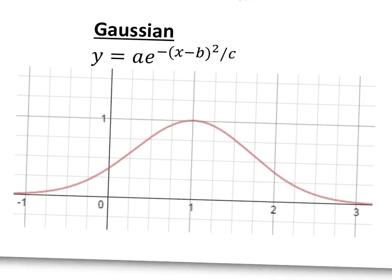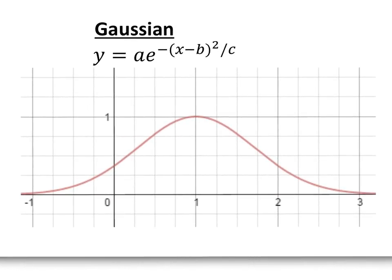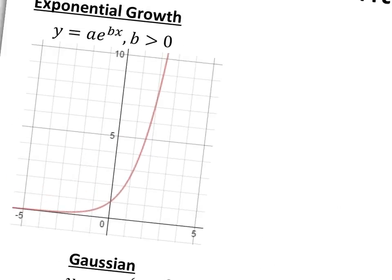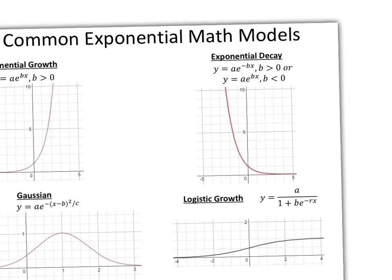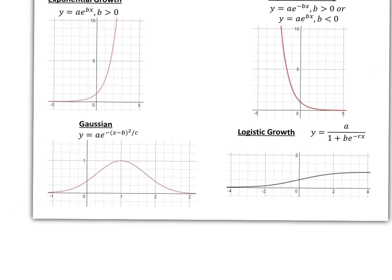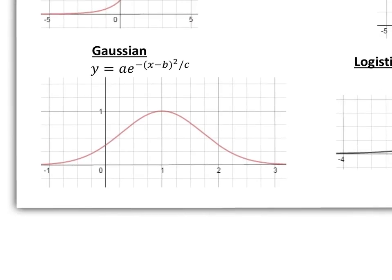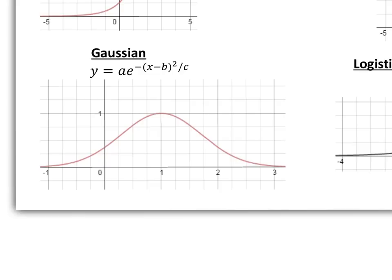The next one is called the Gaussian function model. Instead of our base just being something normal, we have negative x minus b squared divided by c.